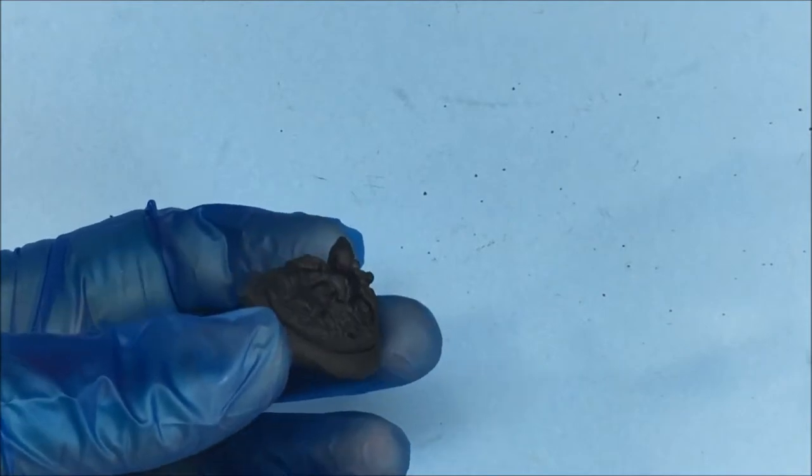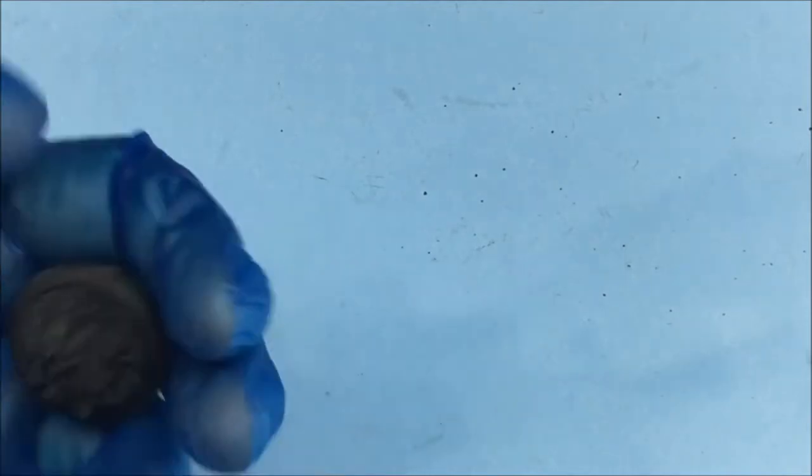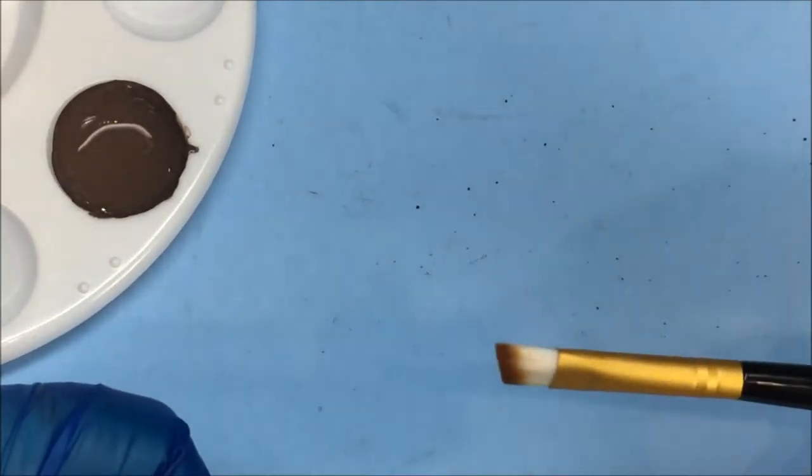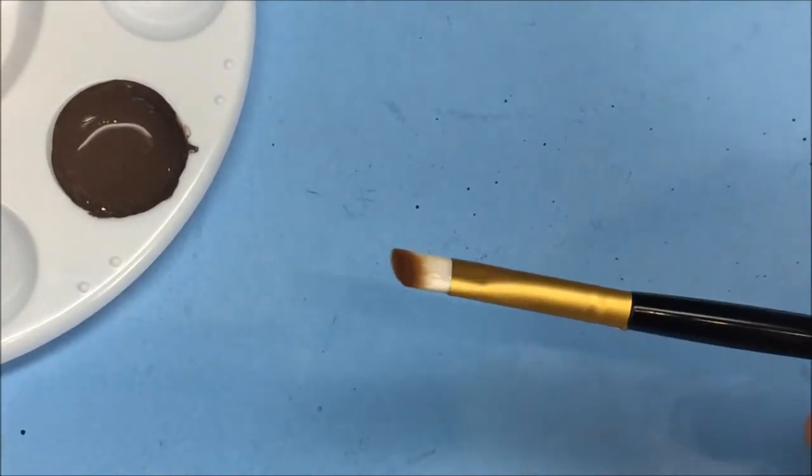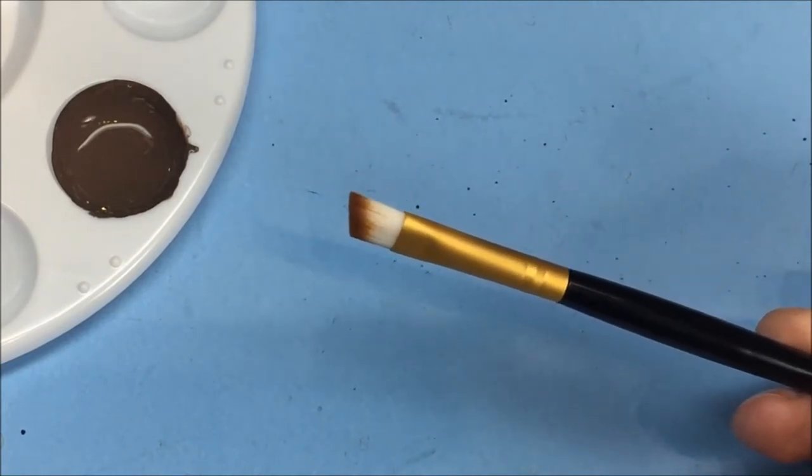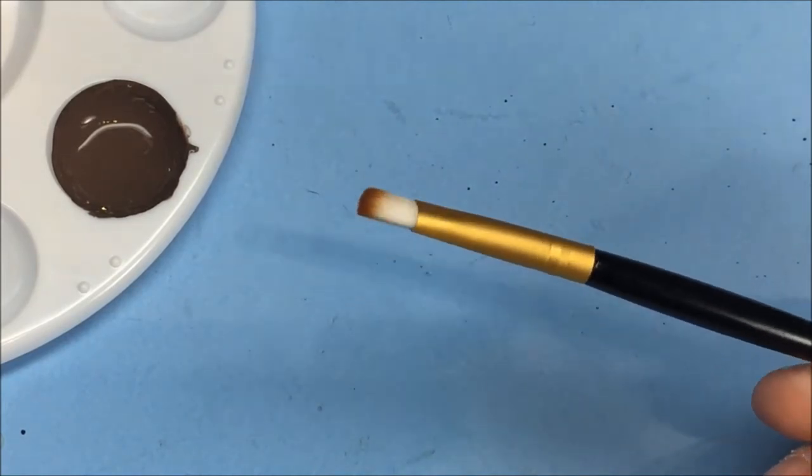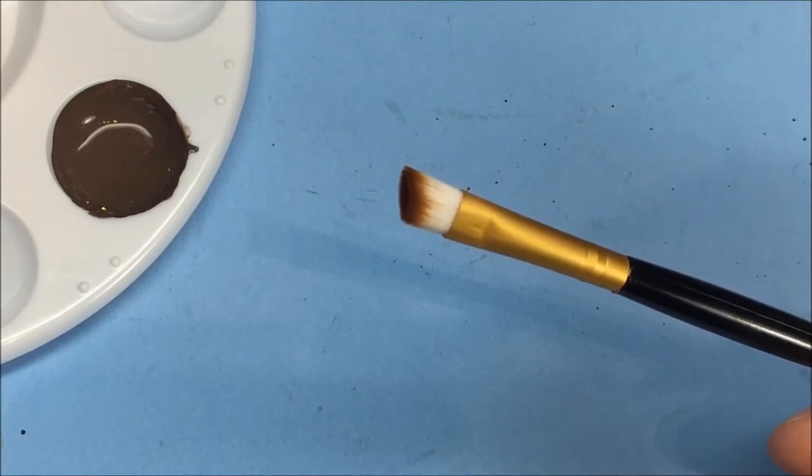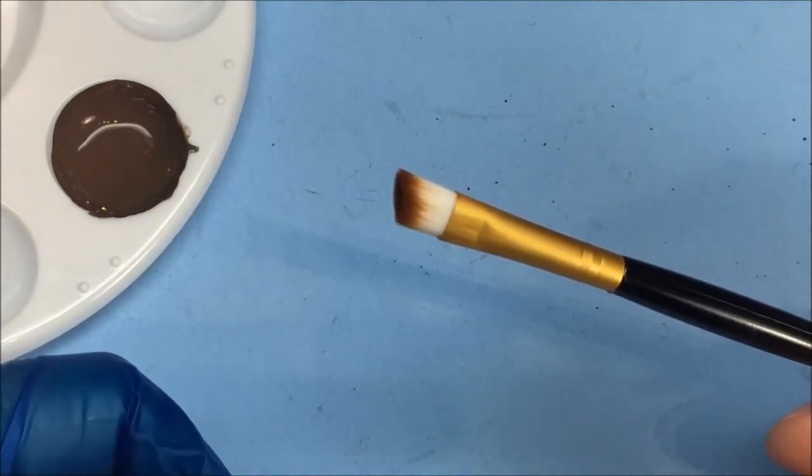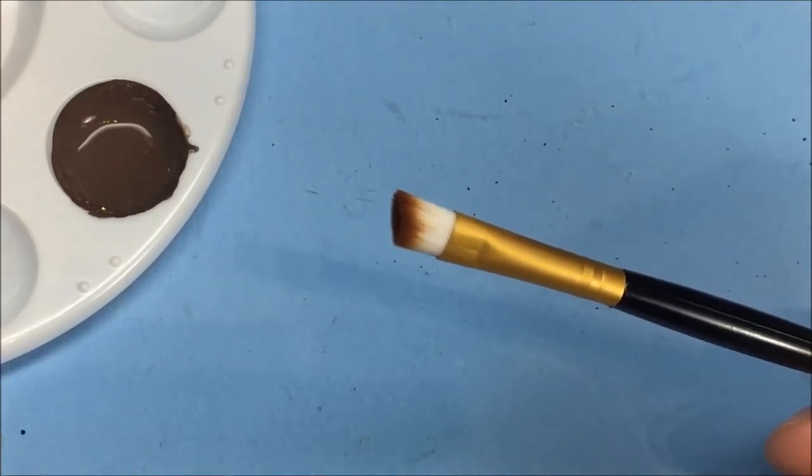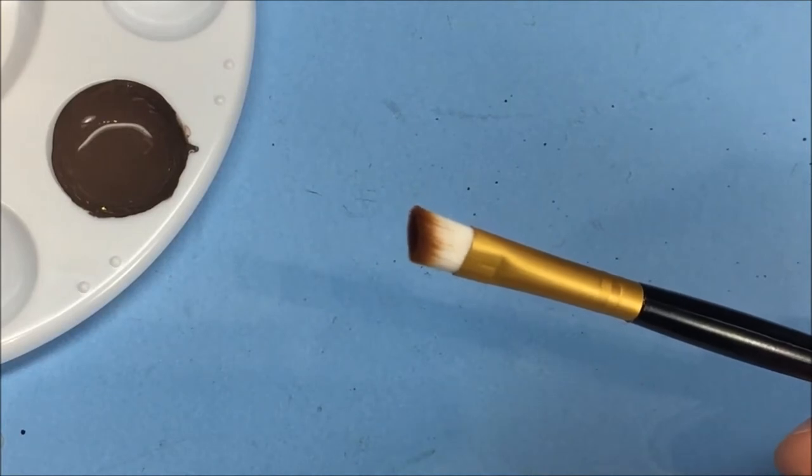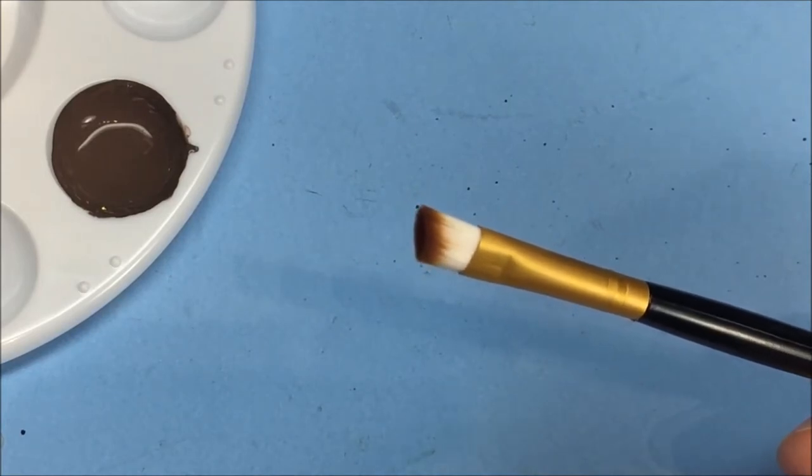So I'm going to start off with the Acromantula and I've got my 50-50 mix ready in a palette. I just want to talk about the brush I'm going to use. You can get these off eBay. They're like a 25-piece makeup brush set.